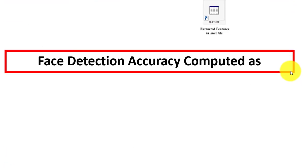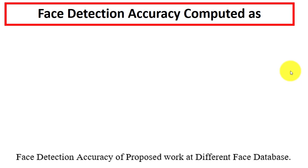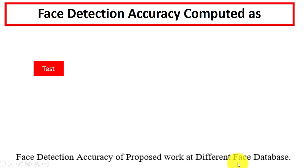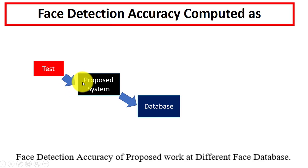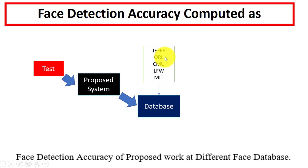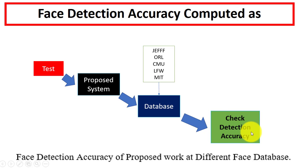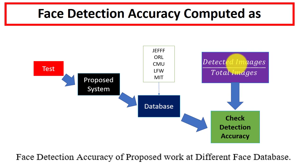Next is how we can calculate face detection accuracy. We will see how to find the face detection accuracy of a proposed model at different face databases. The first step is to test the proposed system on different databases. For face detection we have different databases like JEFF, ORL, CMU, LFW, and MIT.